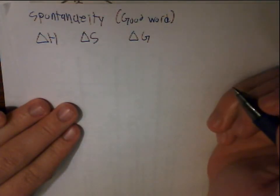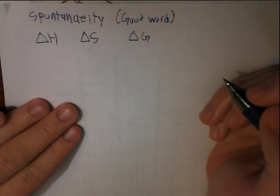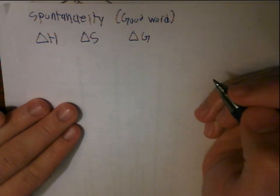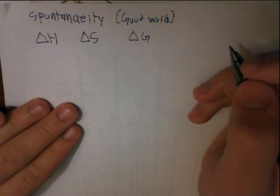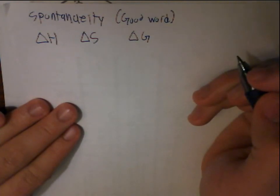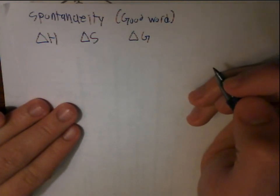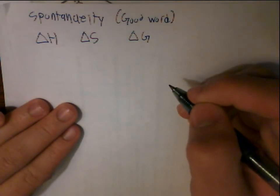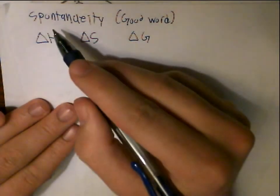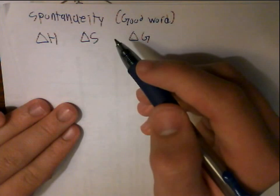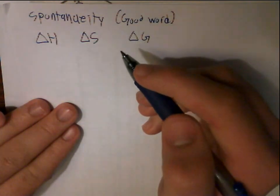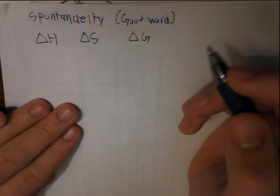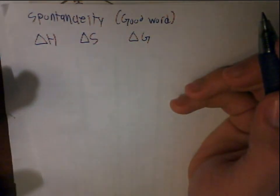This is Part 2, so you should probably watch Part 1 before watching this. This video covers some numbers on equilibriums, and it's also a discussion of spontaneity — whether or not a reaction is spontaneous, or whether or not a reaction will happen.